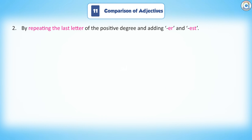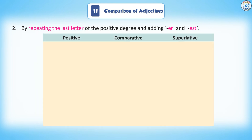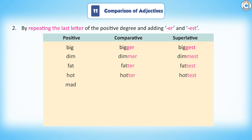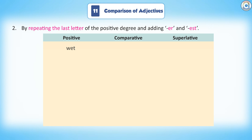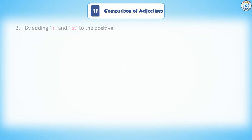Rule 2: By repeating the last letter of the positive degree and adding -ER and -EST. Positive, comparative, superlative: Big, bigger, biggest. Dim, dimmer, dimmest. Fat, fatter, fattest. Hot, hotter, hottest. Mad, madder, maddest. Red, redder, reddest. Sad, sadder, saddest. Slim, slimmer, slimmest. Thin, thinner, thinnest. Wet, wetter, wettest.